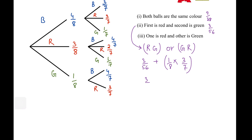Let's simplify: 3/56 plus 3/56 gives us 6 over 56. Since they're both even, I'll simplify by 2, which gives 3 over 28. They can't be simplified any further, so that's the answer for part 3.